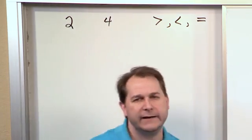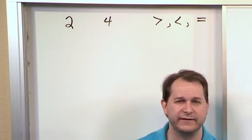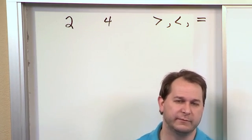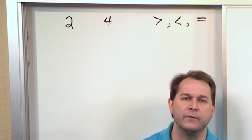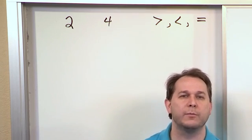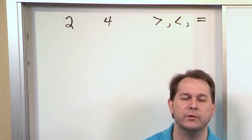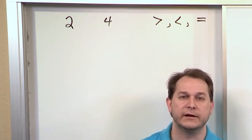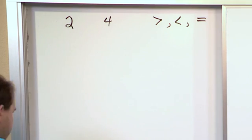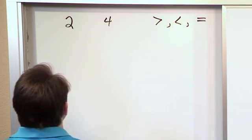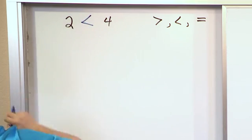The way you decide what symbol to put in there is extremely simple. I'm going to tell you the secret. Not all teachers will tell you this, but I'm going to tell you the secret. The arrow, for the less than or greater than, always points to the smaller number. Always. You point that arrow to the smaller number and then you will always get the right answer. So in this case, because I have a two on the left and a four on the right, I'm going to point it this way because the arrow always points to the smaller number.